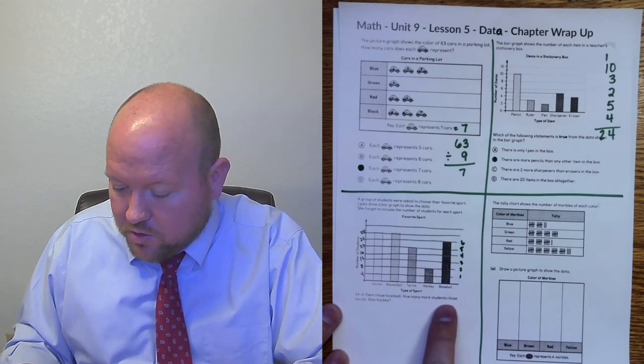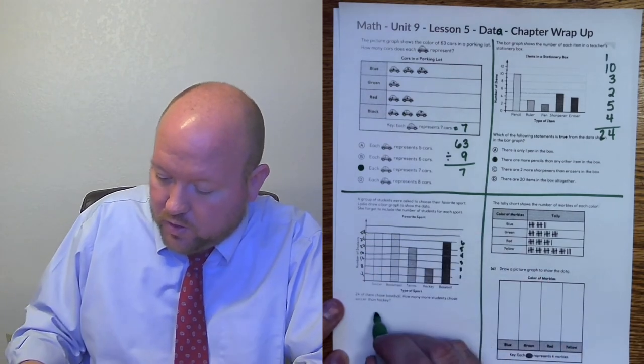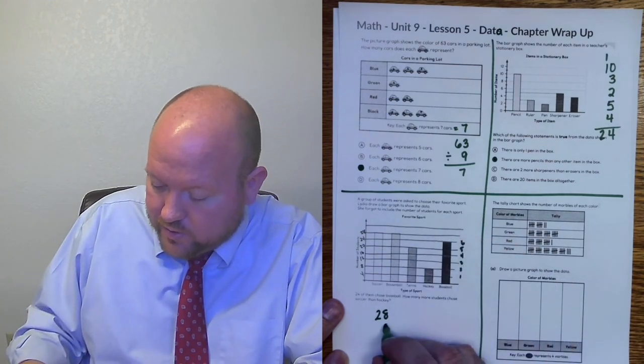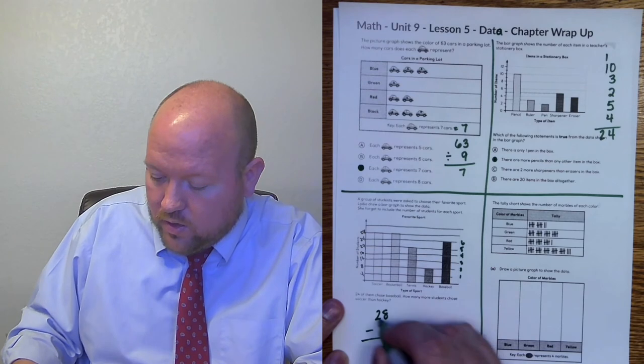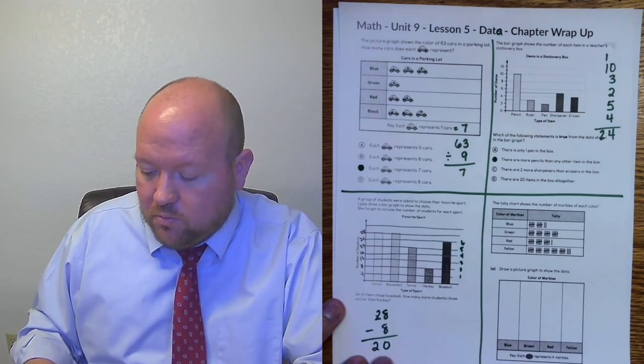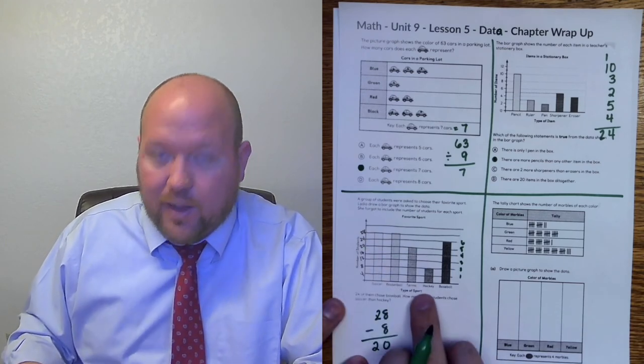So how many more students chose soccer than hockey? Now I can see soccer goes up to here, which is equal to 28 and hockey goes up to here, which is only eight. And therefore 28 minus 8, eight minus eight is zero, two minus nothing is two. So 20 students more, 20 more students chose soccer than hockey.